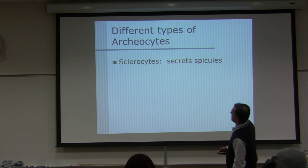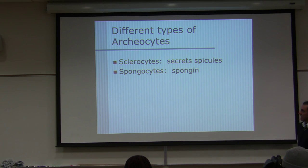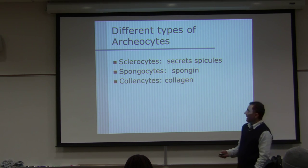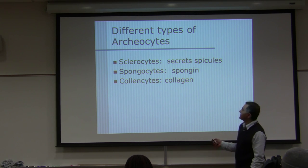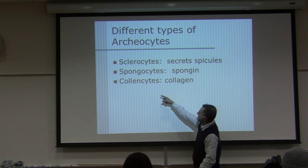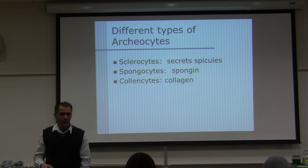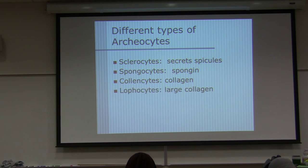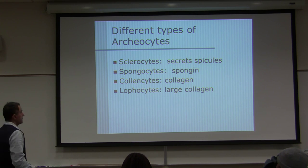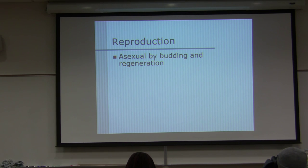Different types of archaeocytes: sclerocytes secrete spicules; spongocytes secrete spongin. Cyanocytes secrete collagen — a large amount. Lophocytes release a tremendous amount of collagen. Reproduction: asexual — budding and regeneration.